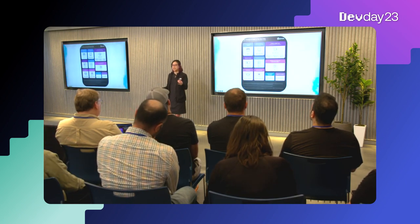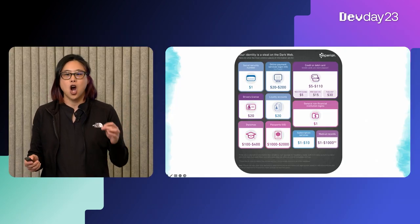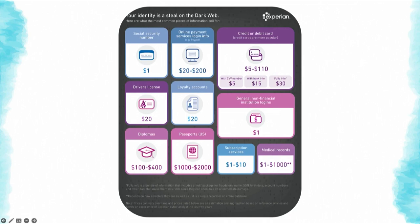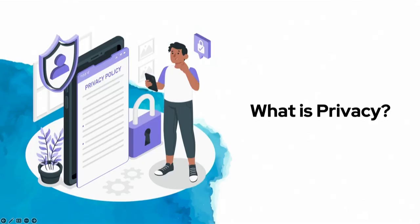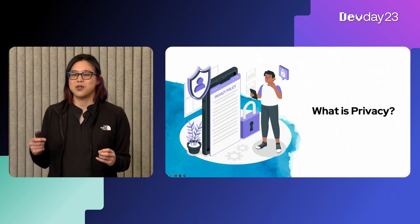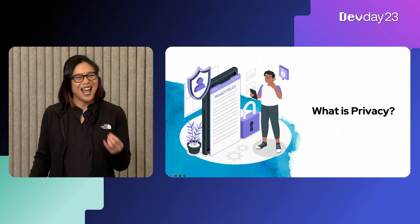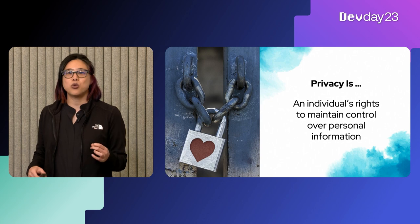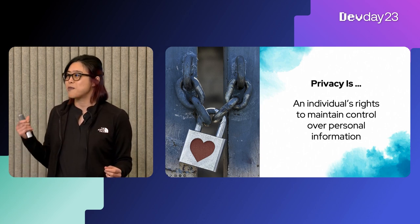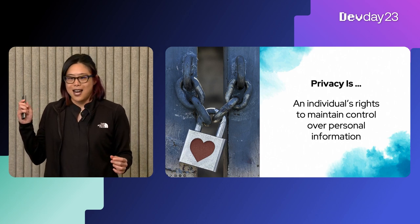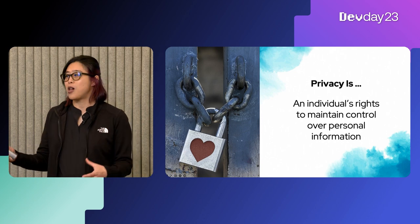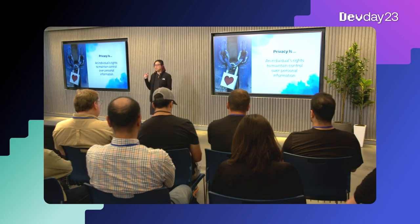Here is a chart from 2017 from Experian that shows the value of people's data on the dark web. Social security numbers are worth about a dollar, surprisingly, but passport information and passports are about $1,000 to $2,000. So it should be obvious why privacy is important. At its core, privacy is an individual's right to maintain control over their personal information. And this control can be achieved through policies such as legal and corporate policy, but also technical engineering controls.